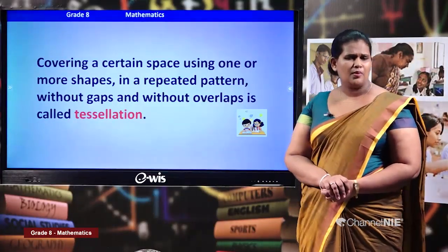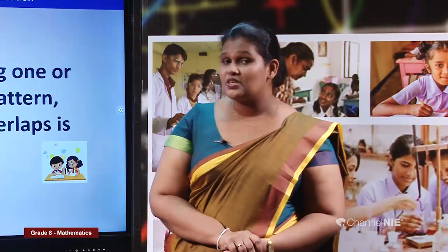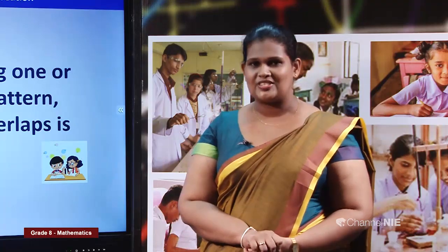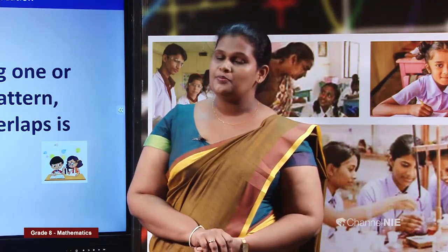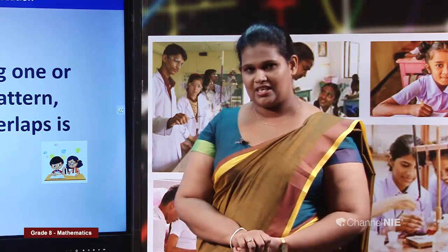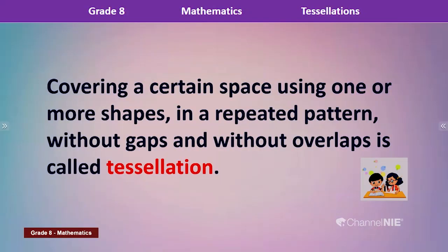Now we have gone through some examples for tessellation. Can you remember what you learned in grade 7? What is tessellation? It's an arrangement of shapes — one or more shapes — but you should not have gaps or overlaps between two shapes. Covering a certain space using one or more shapes in a repeated pattern without gaps and without overlaps is called tessellation.